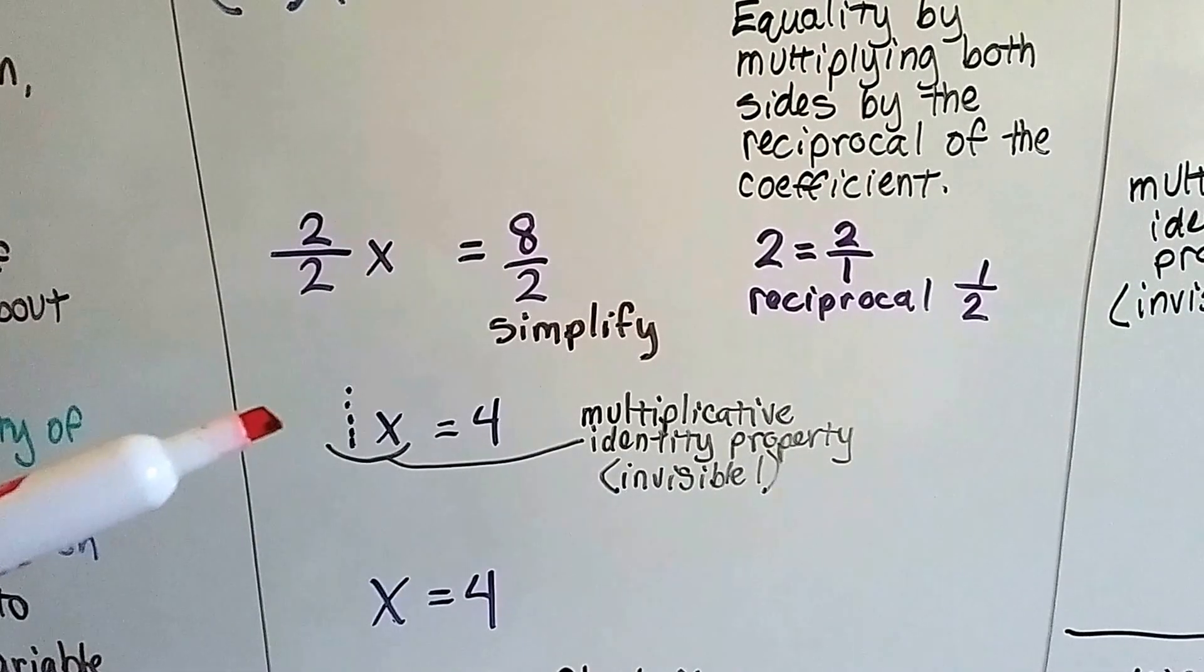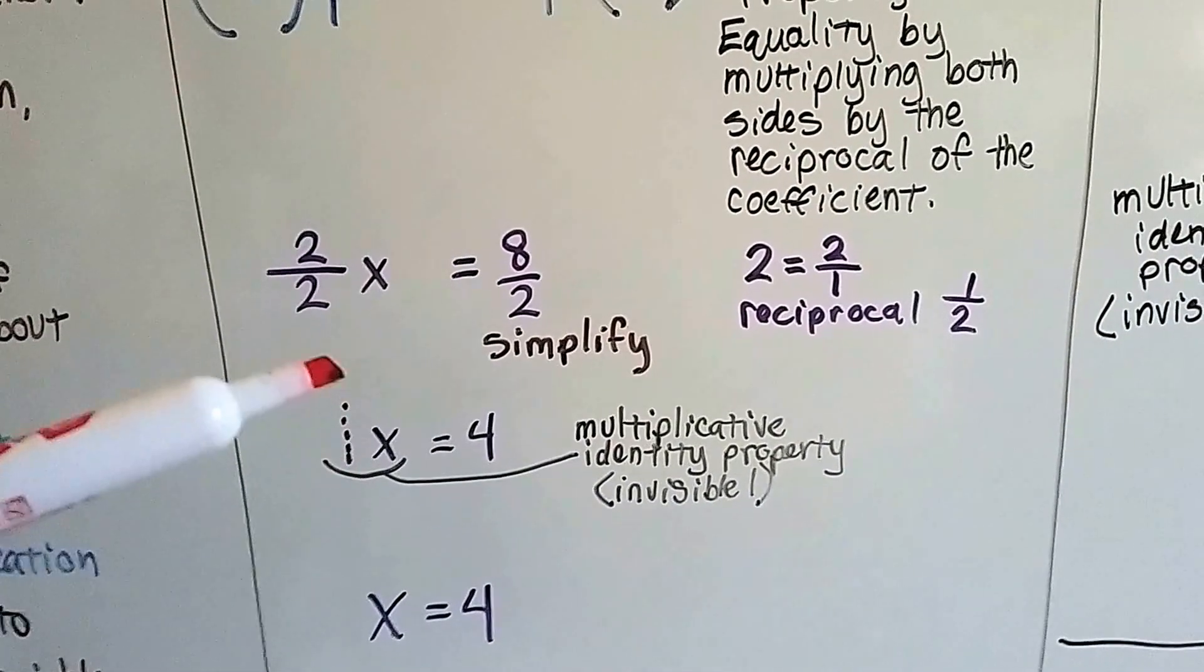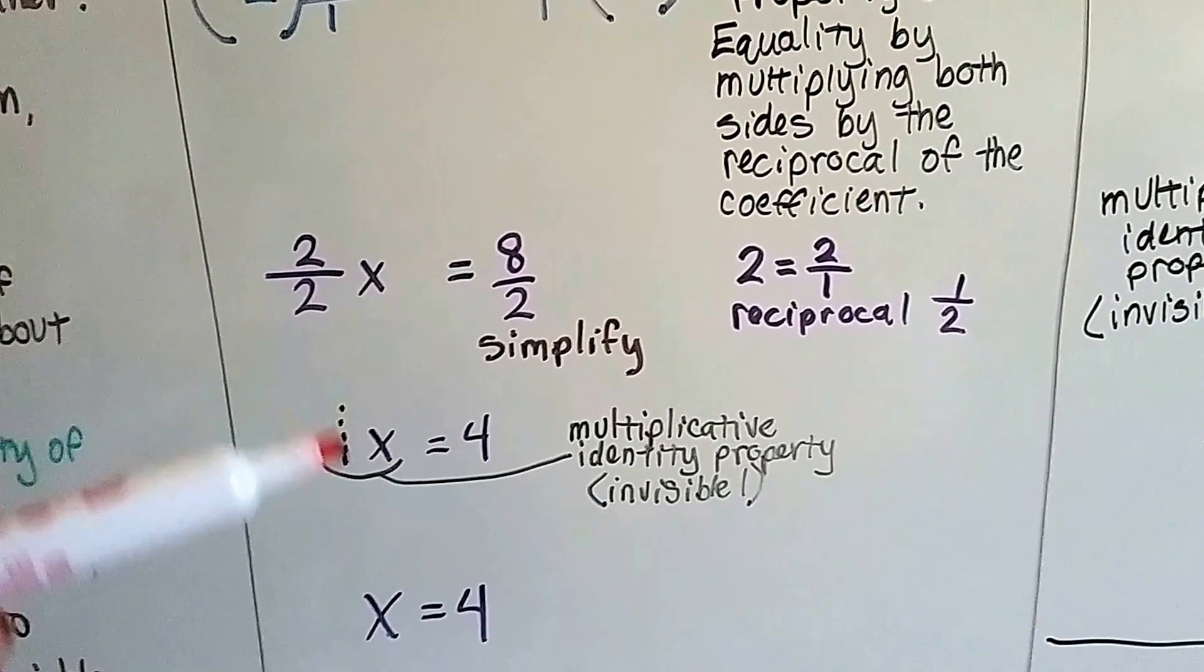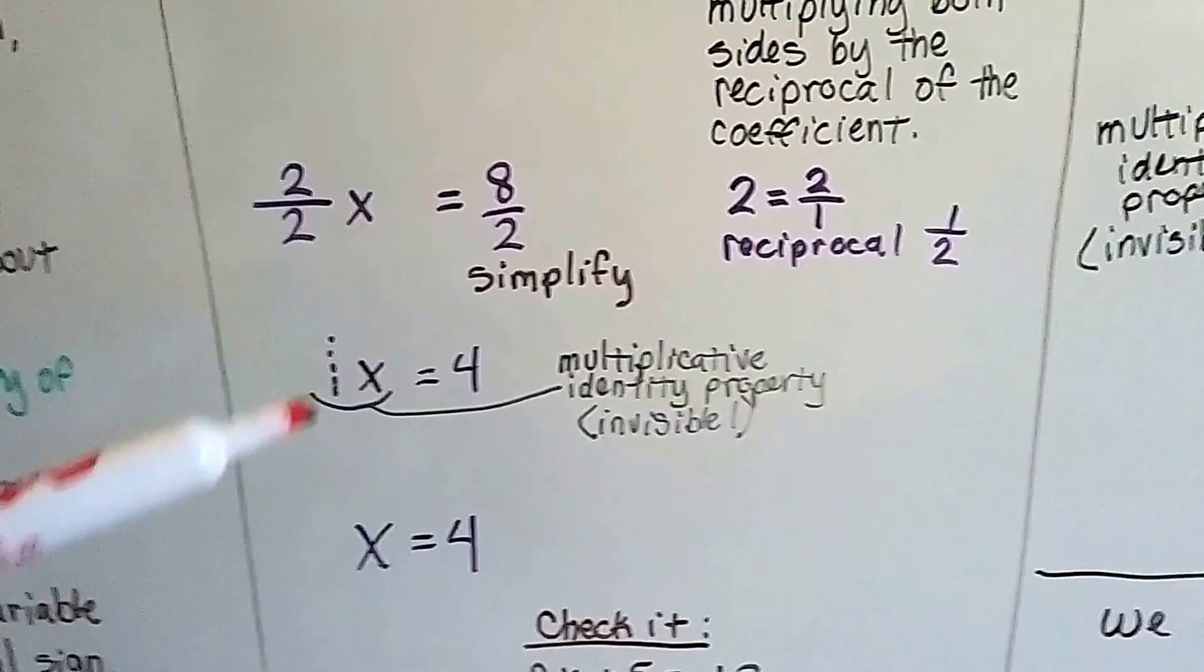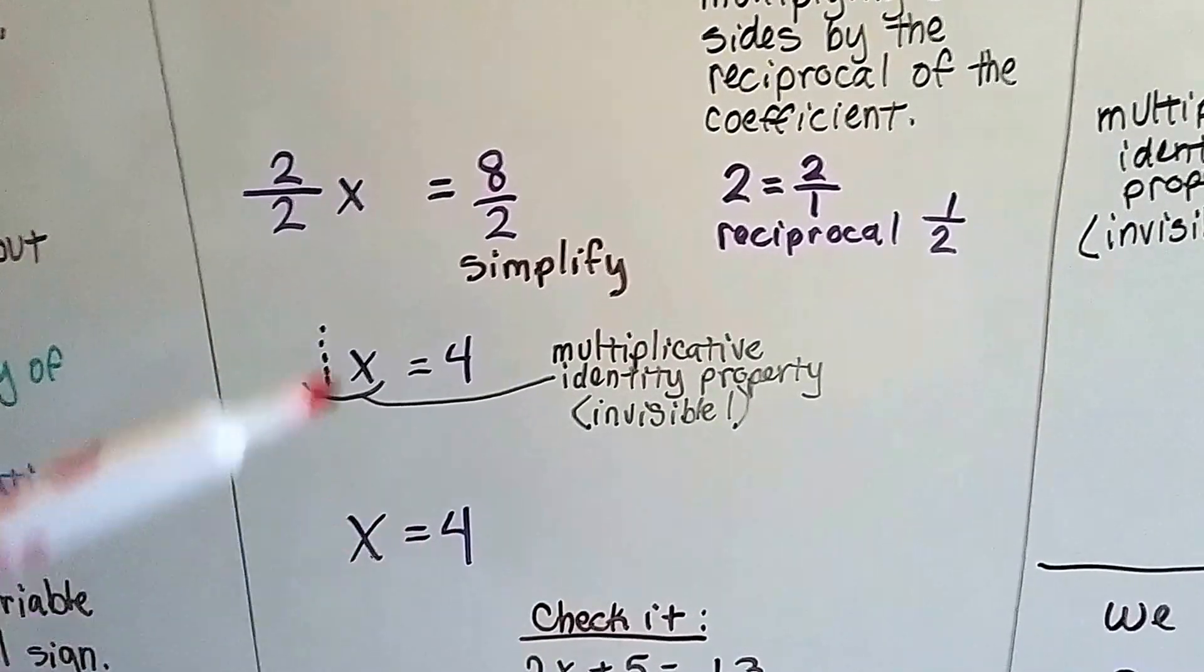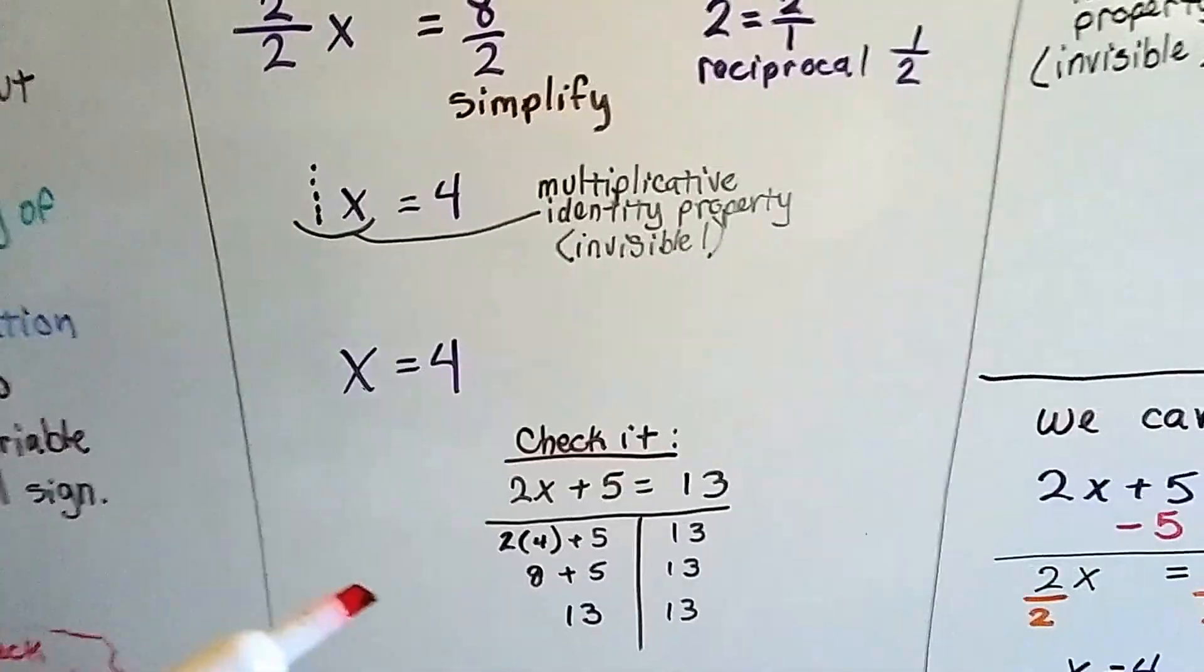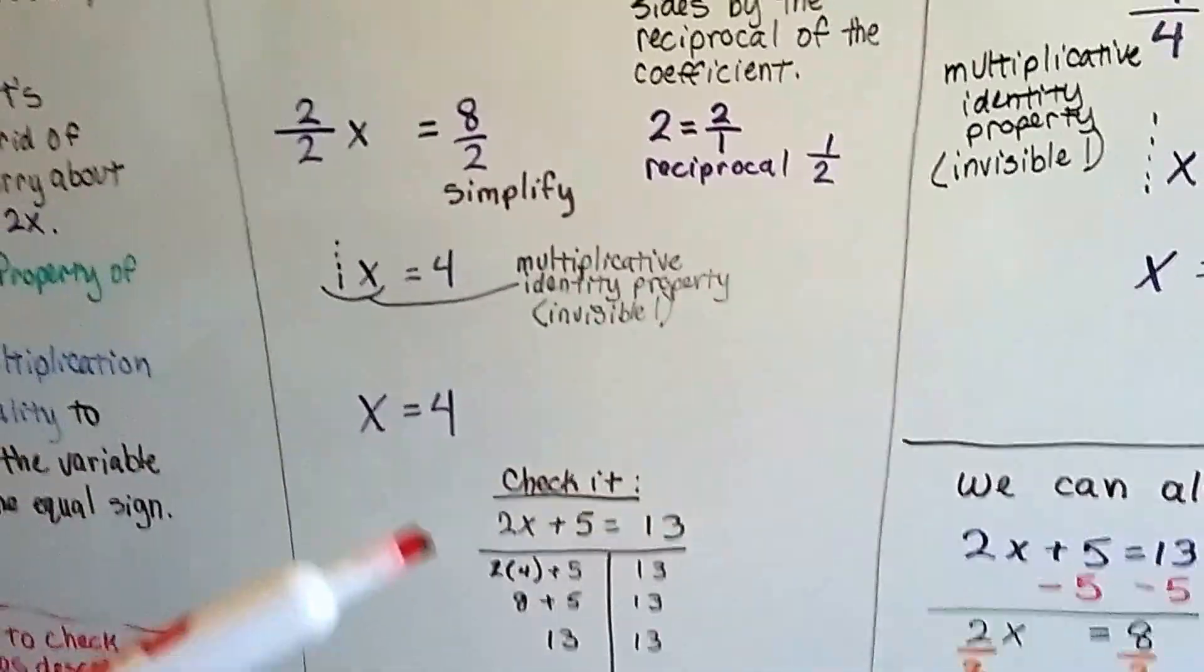Now, what we have to do is simplify. And remember, the multiplicative identity property says that this 1 is a 1x. We don't need to write the 1. That's our buddy, the invisible 1. So we have x equals 4. 8 divided by 2 is 4. Make sure to check it to make sure that your math is correct.